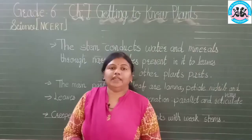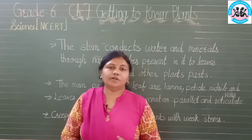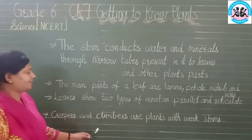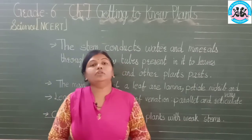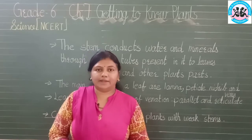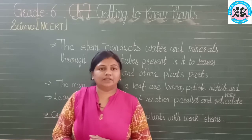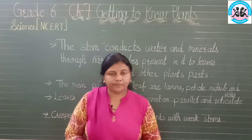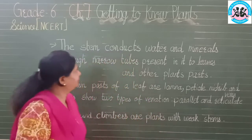Plants fall under three categories: herbs, shrubs and trees. Even creepers and climbers are plants with weak stems. They are neither herbs, shrubs nor trees. Let us now study one by one in detail.